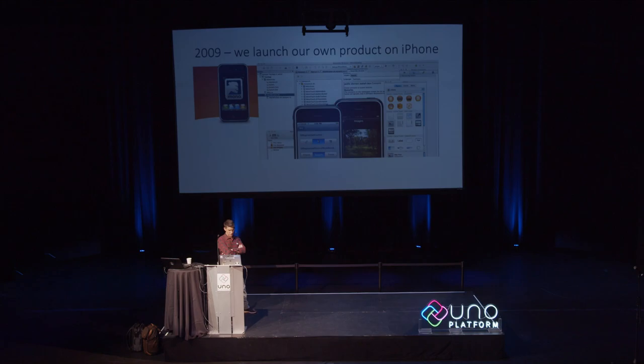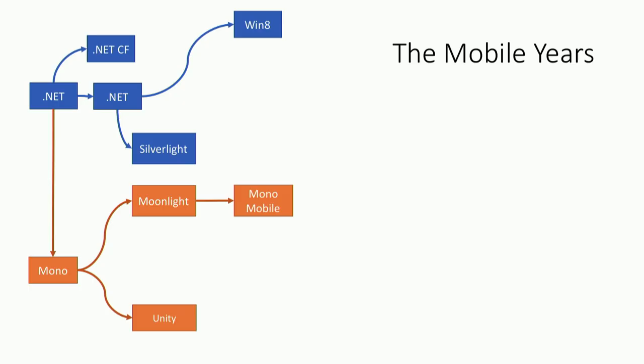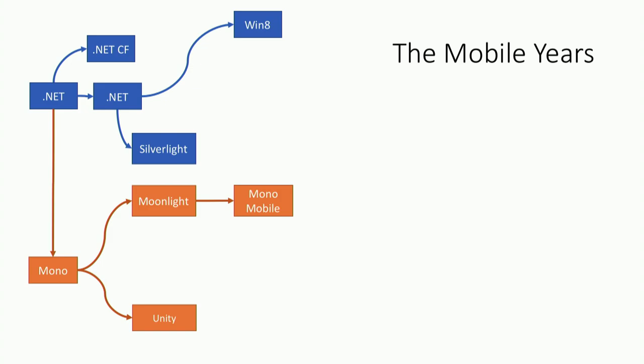Unity was a company of about five people at the time. Within a year they grew to about 75 people and ran one of the largest booths at GDC — a smash success. We figured the iPhone had something, so we decided to build our own product. We launched MonoTouch at Novell, bringing the .NET runtime with APIs for the platform. The .NET world was getting complicated: .NET, Silverlight, desktop Mono, Mono Mobile, Unity, and then Windows 8.